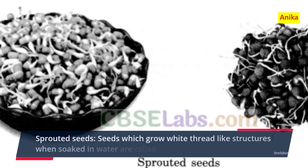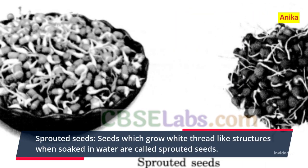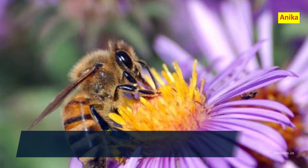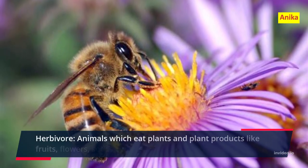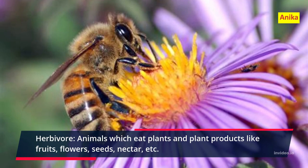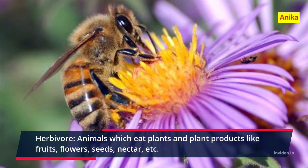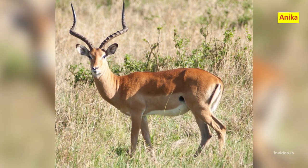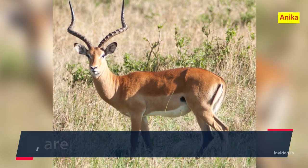Carnivorous: Animals which eat other animals are called carnivorous. Omnivorous: Animals which eat both plants and their products as well as other animals are called omnivorous.